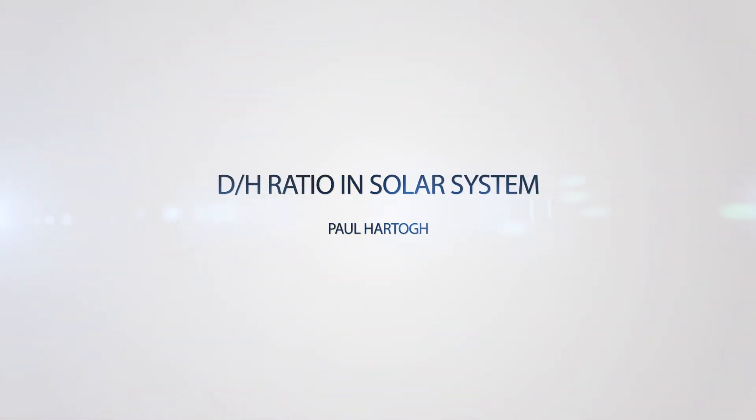So the D over H ratio can be used as some kind of fingerprint for formation of the solar system to constrain the history of the solar system.